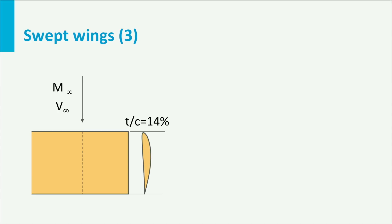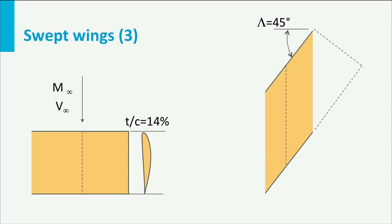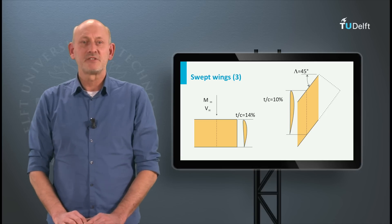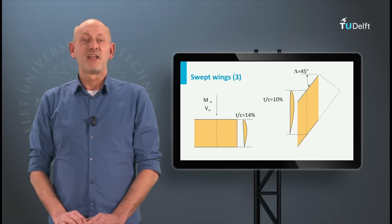We can also look at it from a different perspective. If the straight wing in forward flight would have an airfoil relative thickness of 14%, and if we apply a sweep angle of 45 degrees, the airfoil relative thickness in the flight direction will change, since the absolute thickness remains the same while the chord length increases. In this case the airfoil relative thickness decreases to 10%. We know that thinner airfoils generate higher critical Mach numbers, so wing sweep helps in this respect. There is just one downside: wing sweep lowers the lift force for the same span, since the velocity component normal to the leading edge is smaller than the free stream velocity. In the next lecture we will concentrate on the difference in performance of two-dimensional airfoils and finite wings.